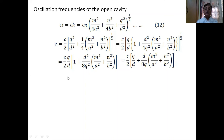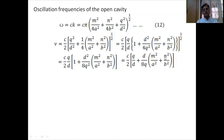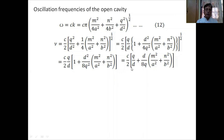Keeping M and N fixed and varying Q gives longitudinal modes. For Q=1, ν = C/2D; for Q=2, ν = 2C/2D; for Q=3, ν = 3C/2D. Different values of M and N refer to transverse modes, while different values of Q refer to longitudinal modes.